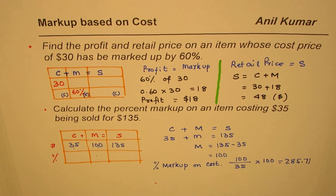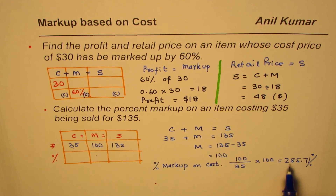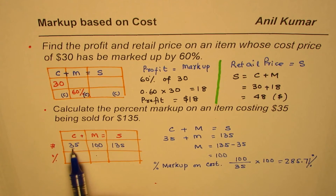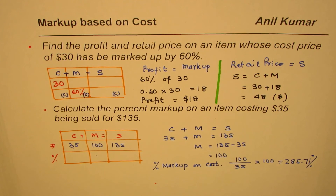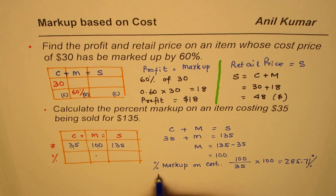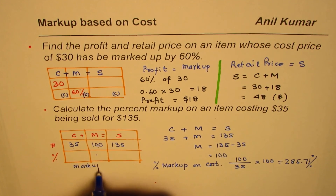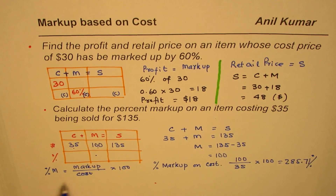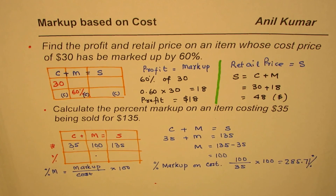So the percent markup is approximately 285%, which is fairly high. The markup on cost is 285.71%. The formula used was: markup over cost times 100 to find the percentage markup. With this example we have related cost, markup, retail, profit, and percent markup. I'm Anil Kumar — you can share and subscribe to my videos. Thank you and all the best.